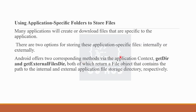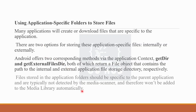Android offers two corresponding methods via the application context: getDir and getExternalFilesDir, both of which return a file object containing the path to the internal and external application file storage directory respectively. Files stored in the application folder are specific to the parent application, typically not detected by the media scanner, and therefore won't be added to the media library automatically.